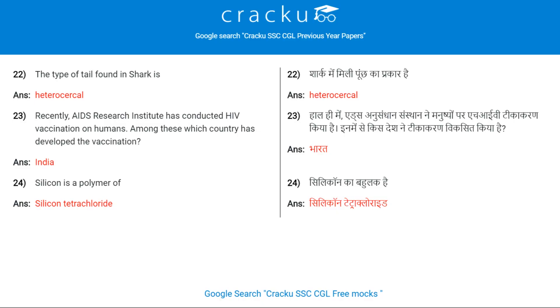The type of tail found in a shark is heterocercal.